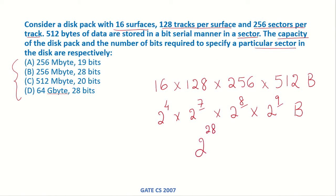So 2 to the power of 28 bytes. 2 to the power of 20 we know is a megabyte. So this is 2 to the power of 8 into 2 to the power of 20 bytes. This becomes megabytes and 2 to the power of 8 is 256, so 256 megabytes. Also how many bits will be required to specify a particular sector?